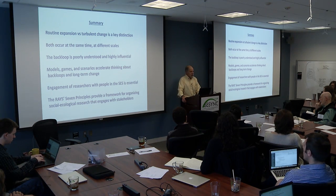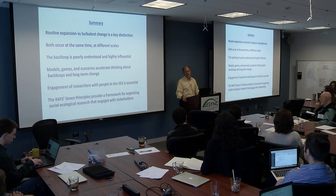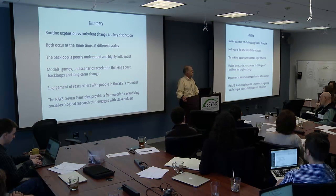And I mentioned models. Engagement of researchers with the people who live in the social ecological system is essential — I can't think of any other way to do it because they know more than you do about the system and you've just got to work with them. Currently, it seems like the RAYS seven principles in that book and that paper are providing a framework for organizing social ecological research that a lot of people are getting excited about. And even though I was not involved in that book, I wanted to mention it to you as something for your consideration. Thanks very much.